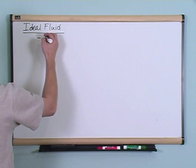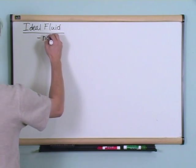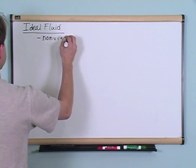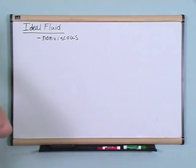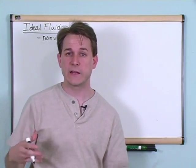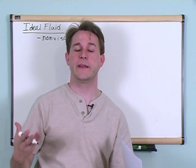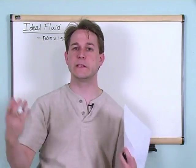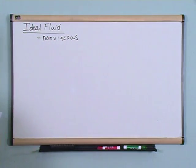First thing is, the first thing that an ideal fluid is, is non-viscous. And that means that something with high viscosity is something like syrup, something really thick like motor oil. We're going to say that an ideal fluid does not have any viscosity. That just means it's freely flowing and it doesn't really have any internal resistance.